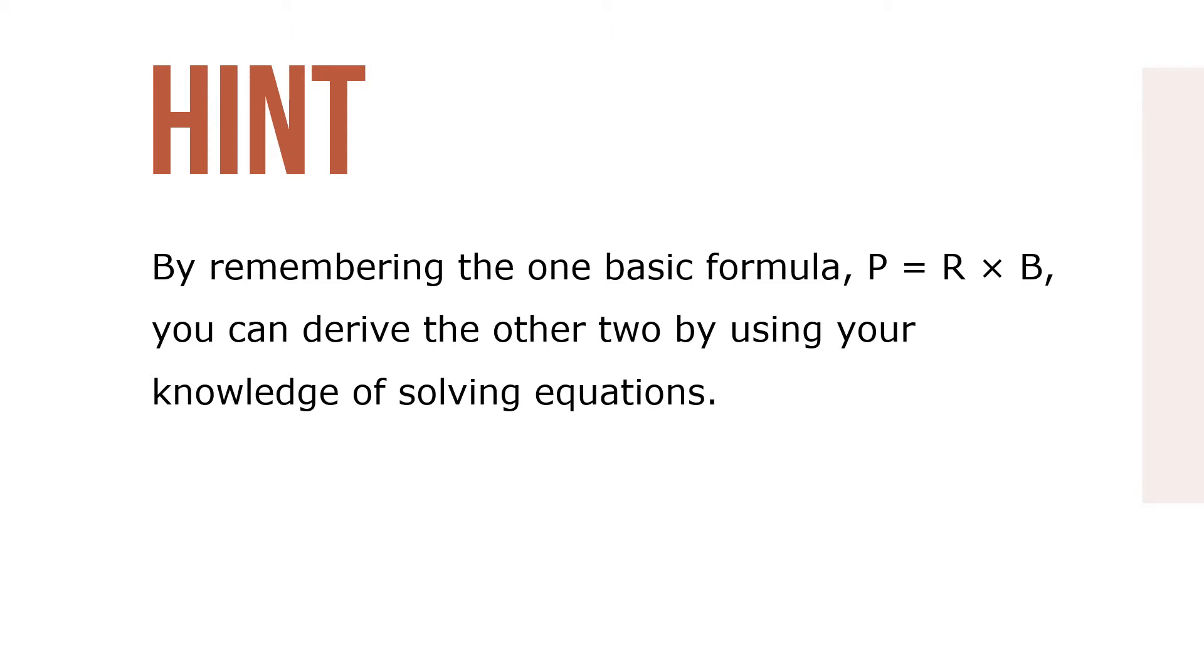Here's a hint. By remembering one basic formula, P equals R times B, you can devise the other two by using your knowledge of solving equations. Because multiplication is indicated, we isolate the known by performing the inverse or opposite operation, division.